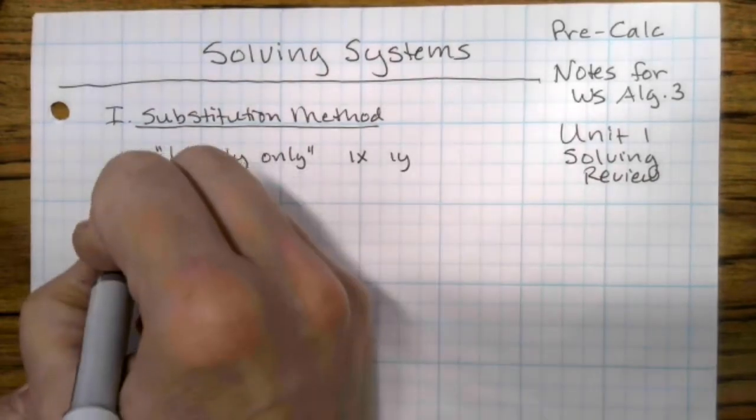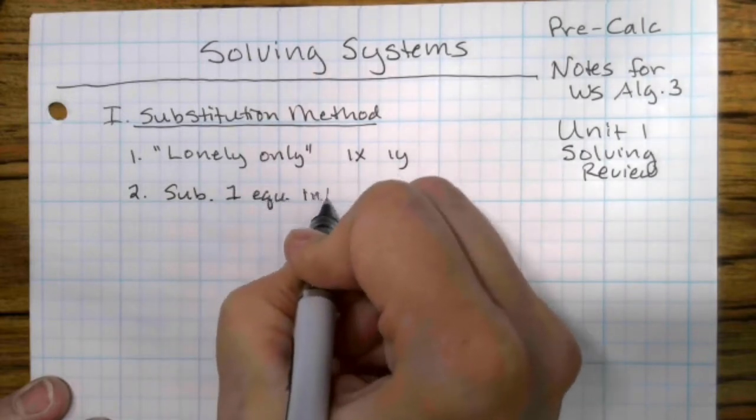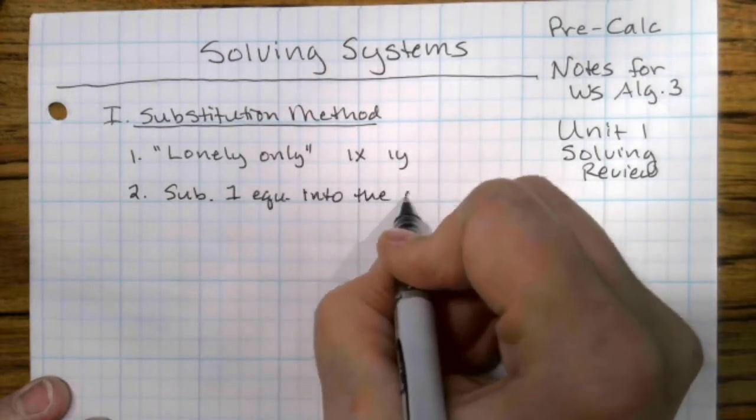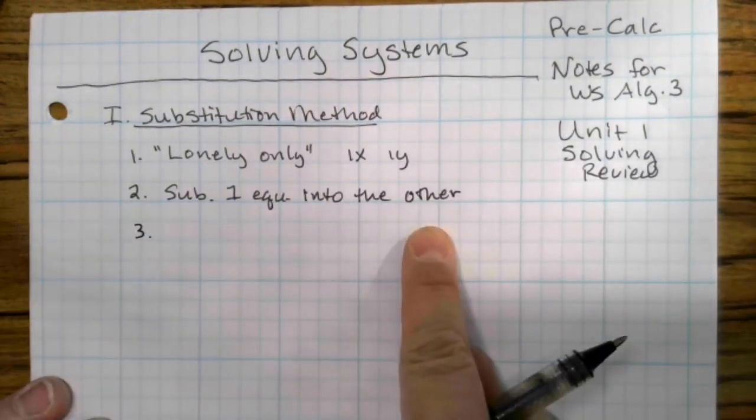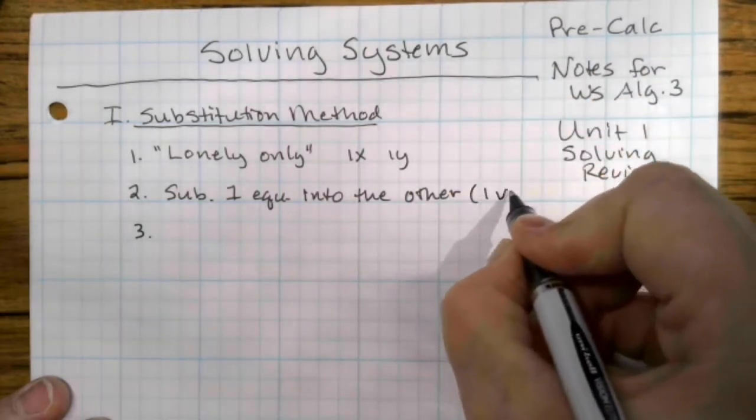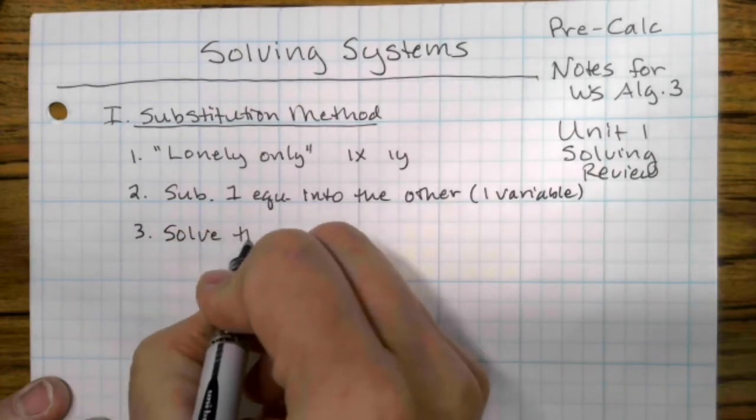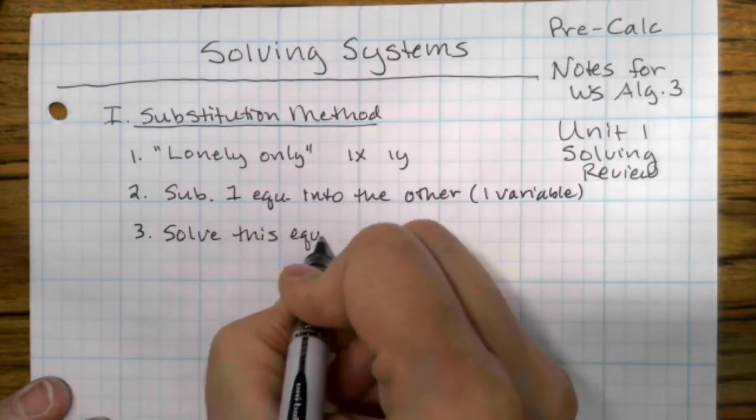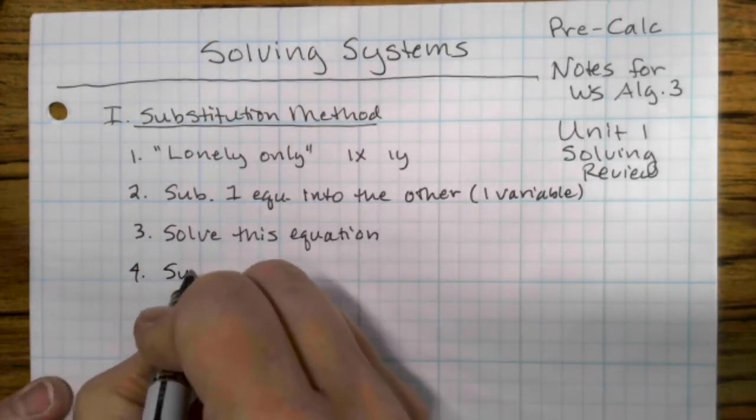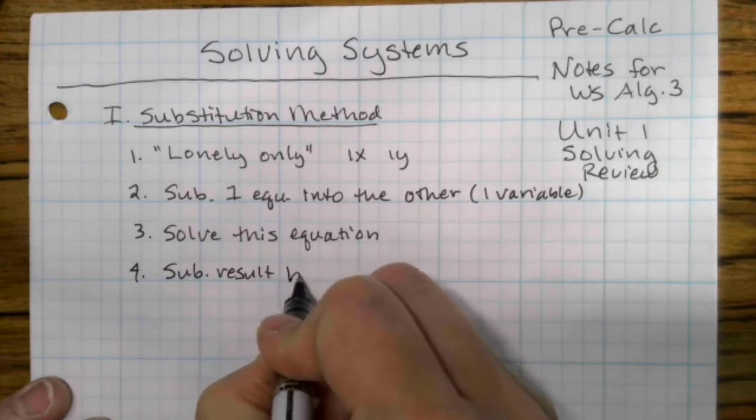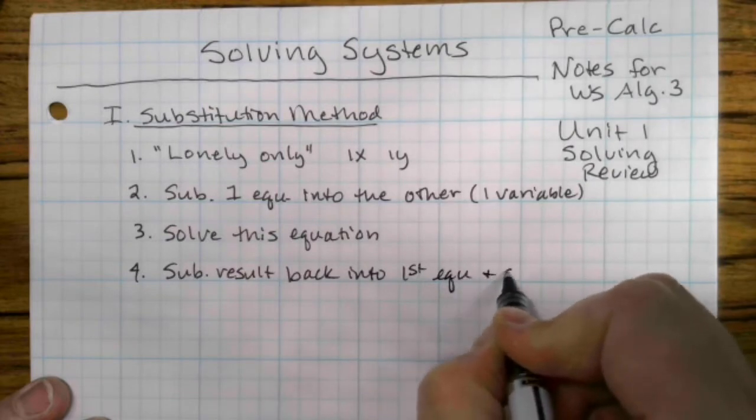Your basic process is you're going to substitute one equation into the other. Now you'll have an equation with only one variable instead of two. So you will solve this equation. And then you'll take your result and you will substitute your result back into the first equation and solve.